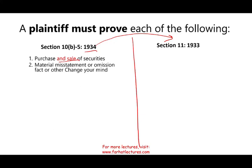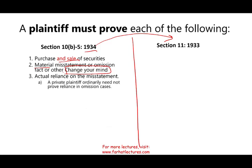There must be a material misstatement or omission of fact. What is material? It means whatever was done will change someone's mind — that's what materiality is. There was actual reliance on the statement. A private plaintiff ordinarily need not show reliance in the case of an omission, because if something is omitted you didn't even know to rely on it. For a material misstatement, indirect reliance is presumed under the fraud on the market theory — when you buy a stock the assumption is it's fairly priced, so if it was mispriced due to a material misstatement, you have indirect reliance.